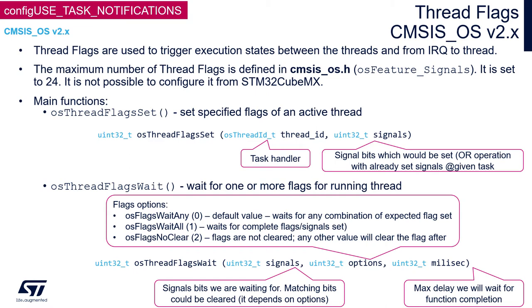There is no function to create thread flags components, as those are components within the task control block of each task. This is why, once we start using task notification, we should take into account an extension of all TCBs – task control blocks – of the tasks in the system.